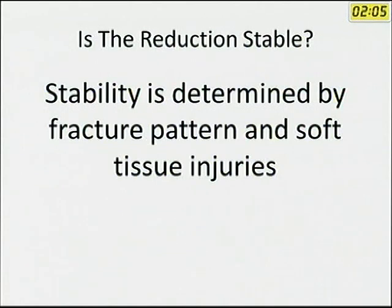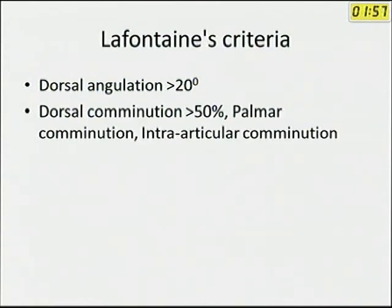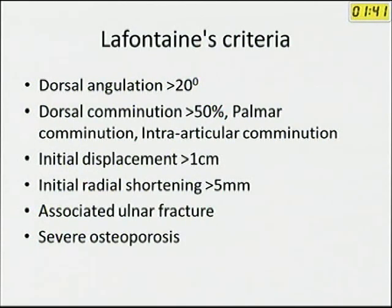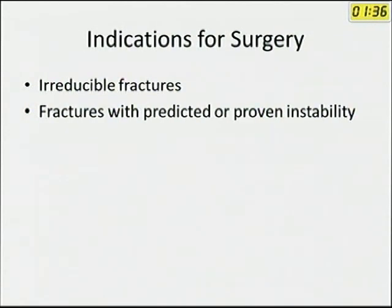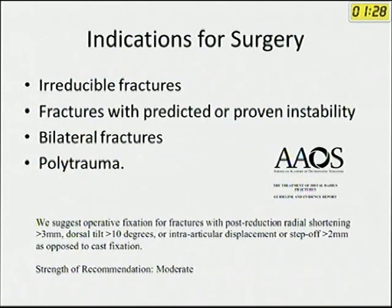To assess whether the reduction is stable, the LaFontaine criteria are used: dorsal angulation less than 20 degrees, dorsal comminution more than 50%, palmar comminution, initial displacement more than 1 cm, and initial radial shortening of more than 5 mm. All these are signs of instability and such patients should usually be treated by surgery. Indications for surgery are irreducible fractures, fractures with predicted or proven instability by LaFontaine criteria, bilateral fractures, and polytrauma.